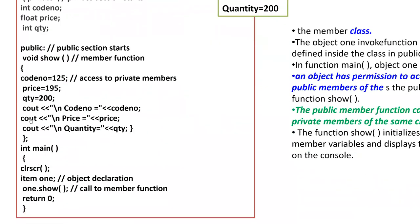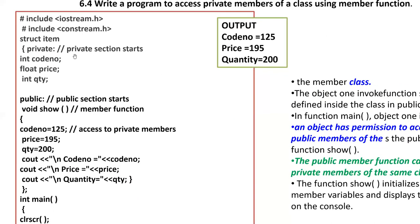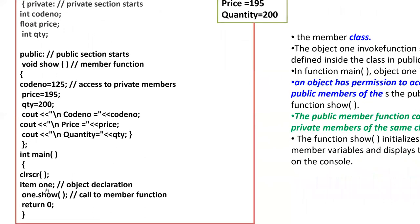If you define the show function and call it using one dot show, you can control the object. The variables will be initialized and displayed. You can define code number, price, and quantity as private data, and access them using the public member function. If you define the object and call the public member function, you can display the data in the class.